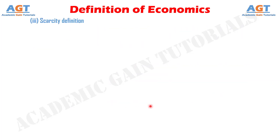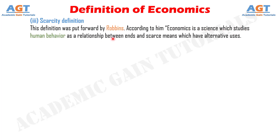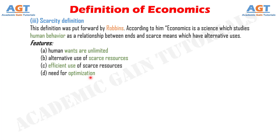Number 3: Scarcity Definition of Economics. This definition was put forward by Robbins. According to him, economics is a science which studies human behavior as a relationship between ends and scarce means which have alternative uses. Features include: human wants are unlimited, alternative use of scarce resources, efficient use of scarce resources, and need for optimization.